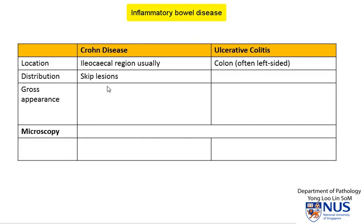Distribution-wise, in Crohn's disease we can have skip lesions, meaning there can be normal mucosa in between abnormal areas. Whereas in ulcerative colitis, usually when the colon is involved, the entire region is involved.